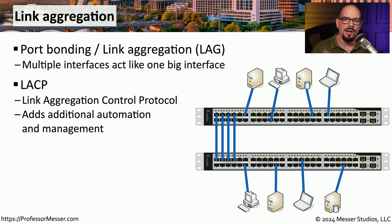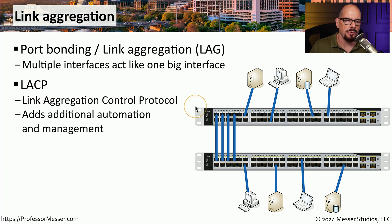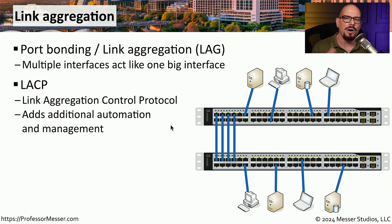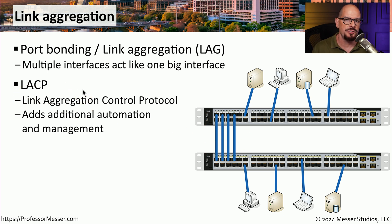Some switches will support an automatic configuration of link aggregation using a protocol called LACP — the Link Aggregation Control Protocol. This allows you to simply configure the interface as LACP, plug in the interfaces, and all of the underlying link aggregation configs will automatically configure themselves between those two devices. If you were to capture traffic between these two devices, you would see LACP traffic being transferred from one switch to the other.